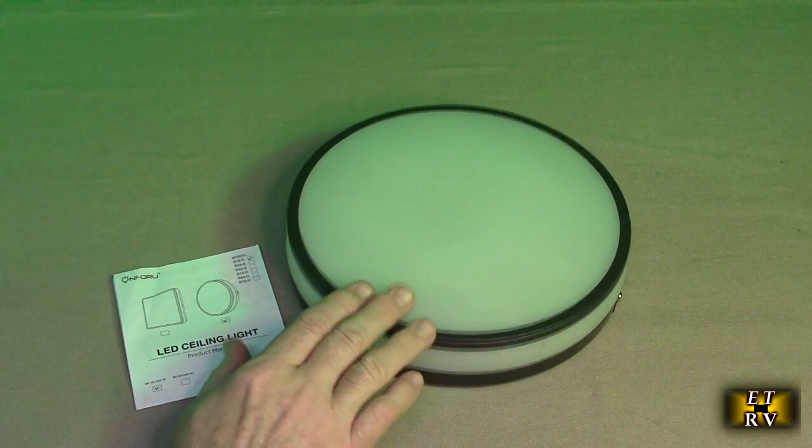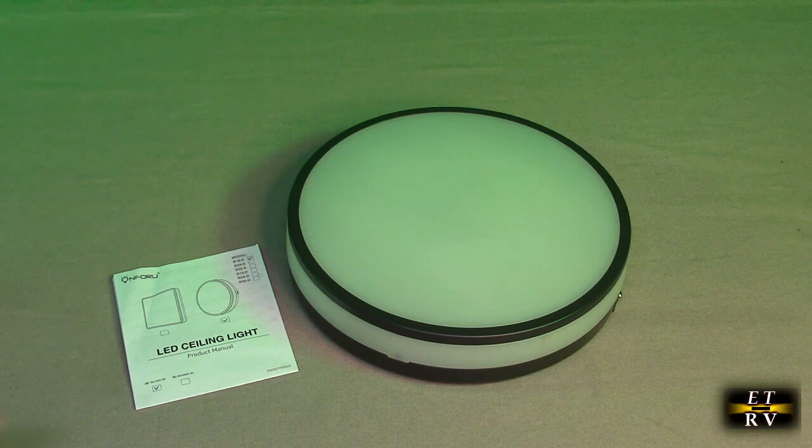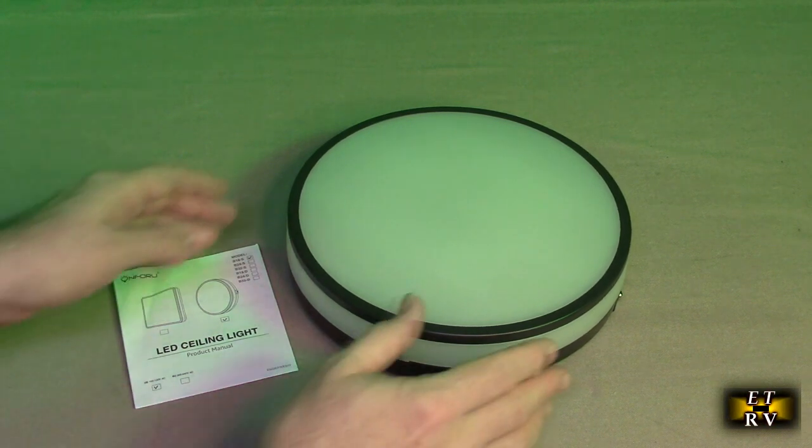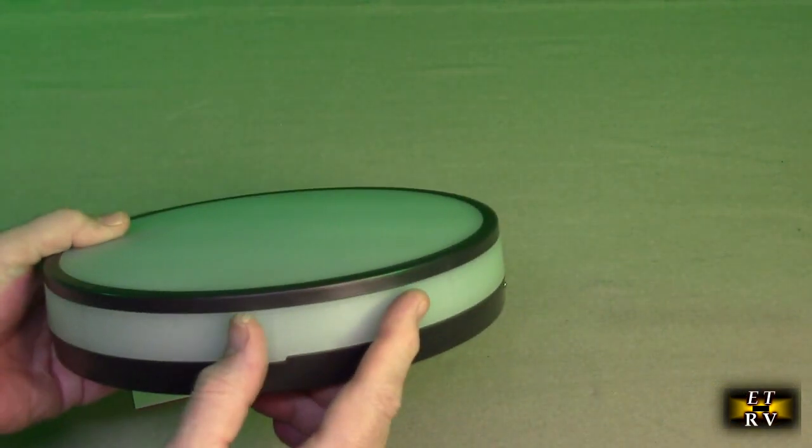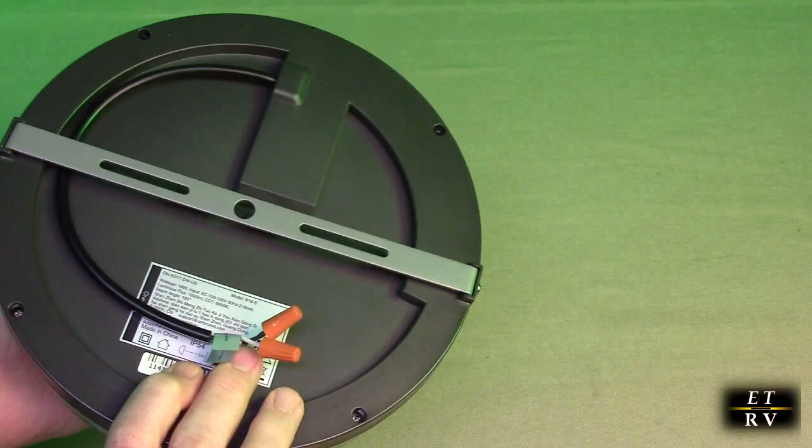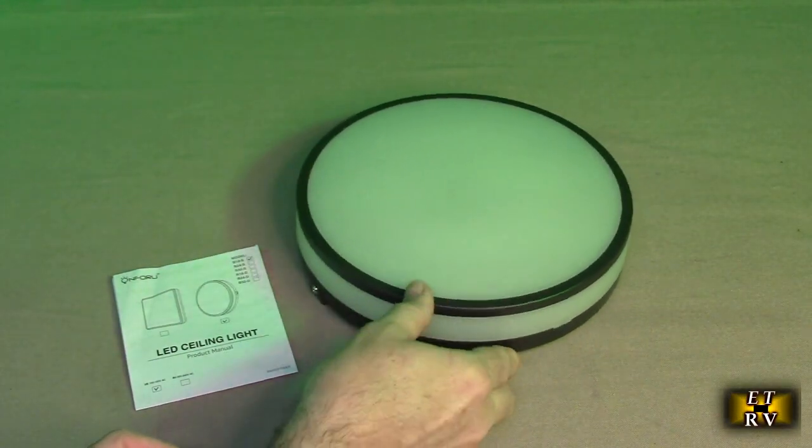The IP65 rating on here is unique, so you can use this by a swimming pool or a porch, and that way it's totally waterproof. They have seals inside here so water can't get in. A lot of lights aren't waterproof at all, so this is unique.